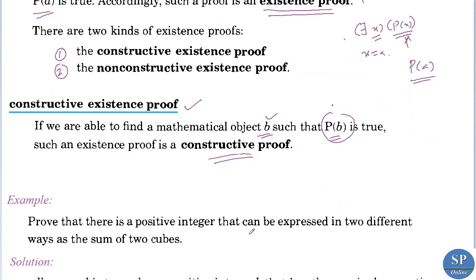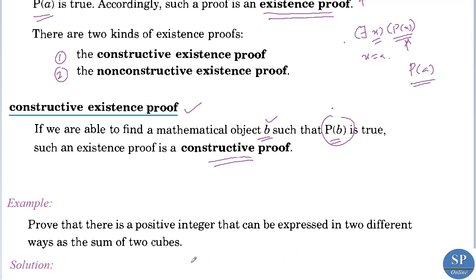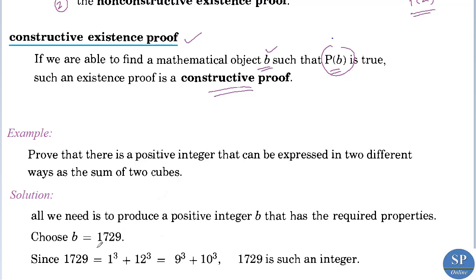For example: prove that there is a positive integer that can be expressed in two different ways as the sum of two cubes. We can find such a positive integer because we know the Hardy-Ramanujan number. The Ramanujan number is 1729. We can express this number as 1 cubed plus 12 cubed, and also as 9 cubed plus 10 cubed. So 1729 can be expressed as the sum of two cubes in two different ways.